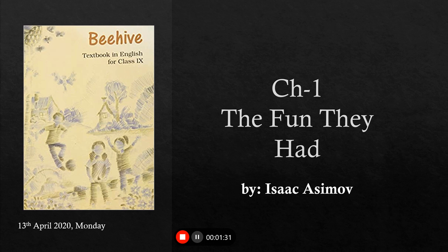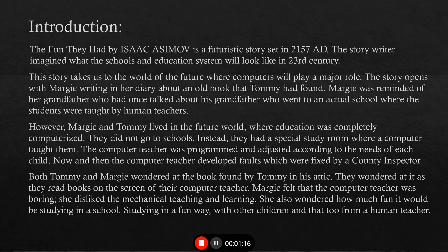This chapter is all about computerized home schooling and what children miss out on by not being in school together. The Fun They Had by Isaac Asimov is a futuristic story set in 2157 AD. Futuristic is something which is very modern in technology or which has characters of the future.